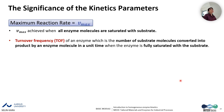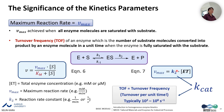The maximum reaction rate Vmax is achieved when all enzyme molecules are saturated with the substrate. Next is turnover frequency: the number of substrate molecules converted into product by an enzyme molecule per unit time when the enzyme is fully saturated with substrate. Turnover frequency is the K2 value, also called Kcat, and is typically in the range of 10² to 10⁸ per second.